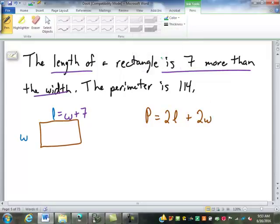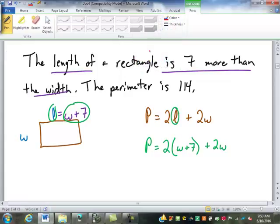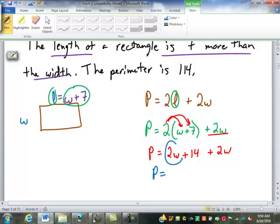So, P doesn't change. 2L or 2 times L becomes. We replace the L with W plus 7. And then plus 2W. Then what would we do? Perfect. 2 times W is 2W. 2 times 7. 14. So, plus 14. Then we still have the other positive 2W. And then. Perfect. We combine the 2W and 2W to make 4W plus 14. Or 14 plus 4W. Either one is fine.